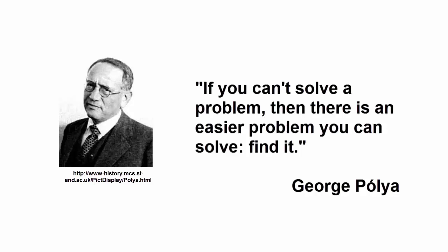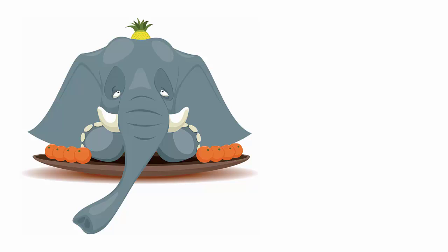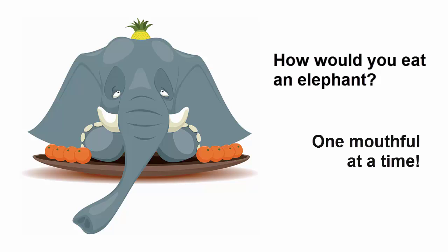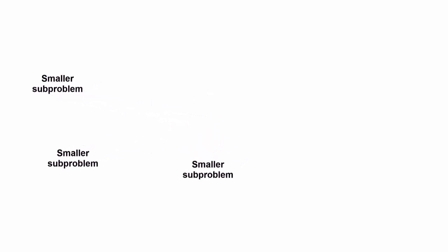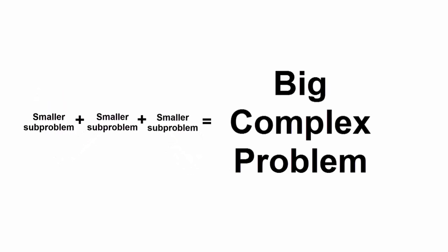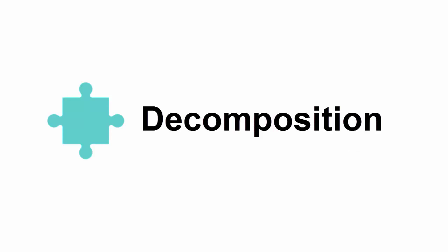Decomposition. For example, consider this ridiculous problem: how would you go about eating an elephant? The answer? One mouthful at a time. This goofy analogy provides great insight into the first step of problem-solving through computational thinking. Big, complex problems are comprised of smaller and more easily solved subproblems or tasks. The process of logically identifying these smaller problems and determining how to use the combined solutions to solve the bigger problem is called decomposition.